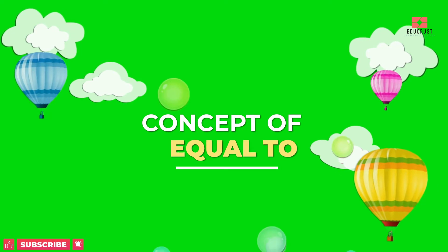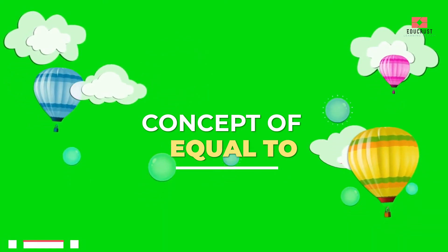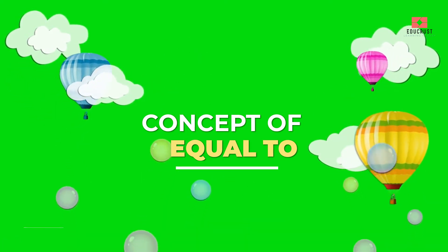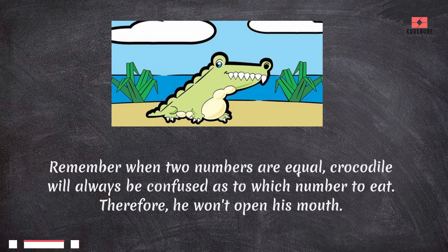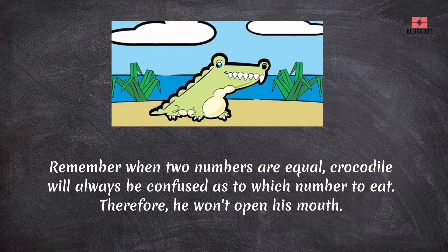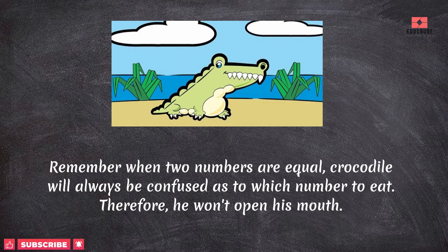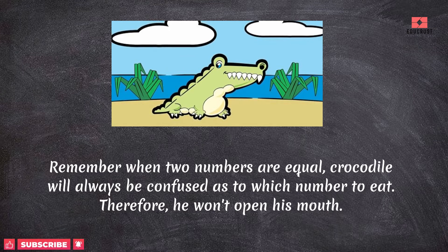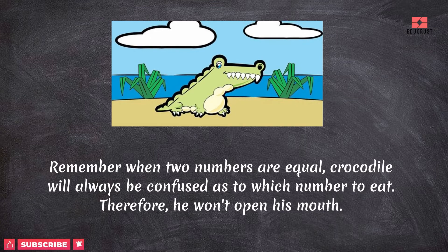Hi kids, today we'll learn about the concept of equal to. Remember, when two numbers are equal, the crocodile will always be confused as to which number to eat, therefore he won't open his mouth.